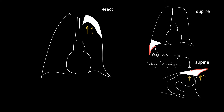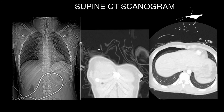Normally, in the erect position, the gas will collect in the apex, but not in the supine position, because this is the least dependent portion where gas rises. This is a different patient. In the scanogram, obviously the patient's supine. You can see a deep costo-phrenic sulcus on the right, compared to the left, suggesting that this patient has a pneumothorax.